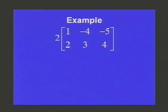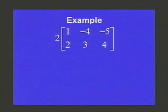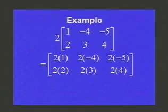Let's look at an example here. Here I have two times the matrix consisting of first row 1, negative 4, negative 5, and second row 2, 3, 4. Just as you would have predicted, you multiply every entry in that matrix by 2.